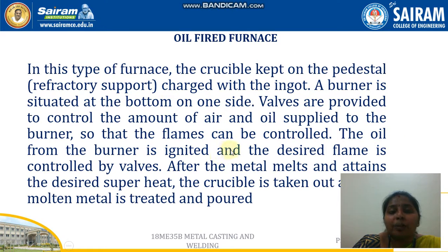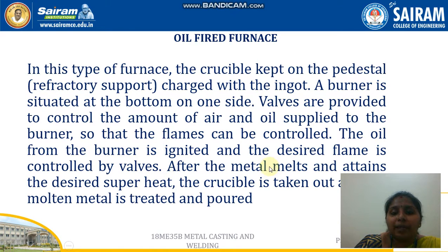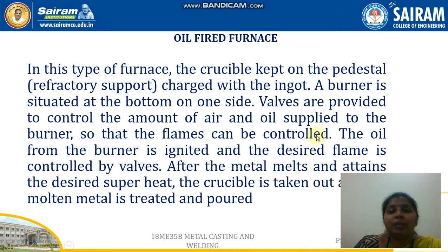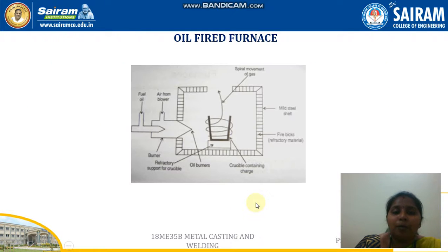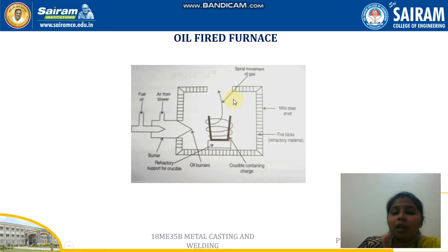The oil from the burner is ignited and the desired flame is controlled by valves. After the metal melts and attains the desired superheat, the crucible is taken out and the molten metal is treated and poured. In this diagram you can see the arrangement of an oil-fired furnace.